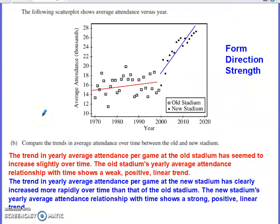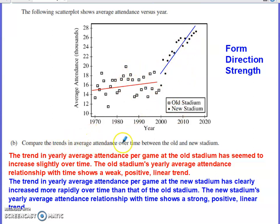Part B gives us a scatter plot showing average attendance over time versus year. The old stadium's data points are depicted by squares, and the new stadium's data points are depicted by dots. We're asked to compare the trends in average attendance over time between the new and old stadium. When asked to describe a trend from a scatter plot, we want to make sure we hit on form, direction, and strength.